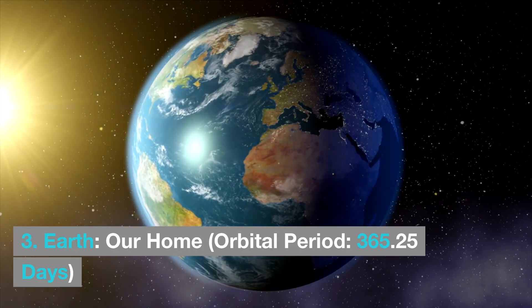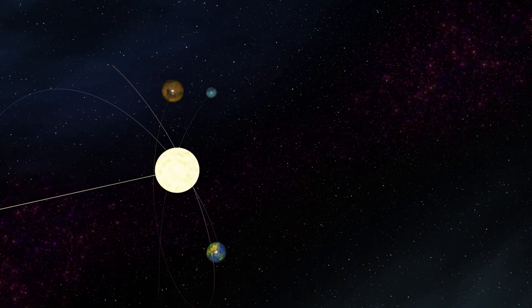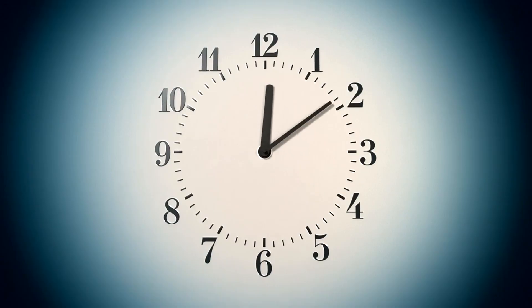Earth, our home, orbital period 365.25 days. It takes Earth, the only planet known to support life, 365.25 days to complete one orbit around the sun. This time frame establishes our calendar year and provides the framework for how we perceive time.